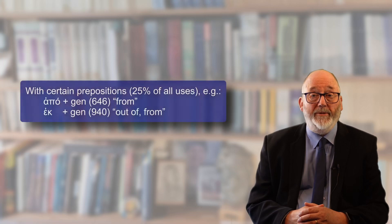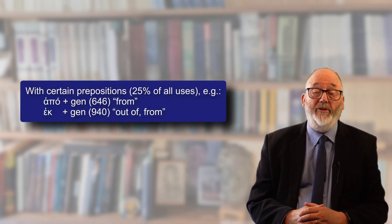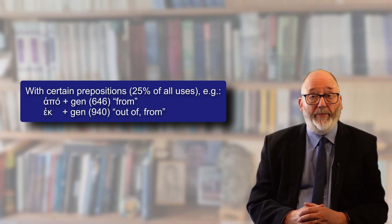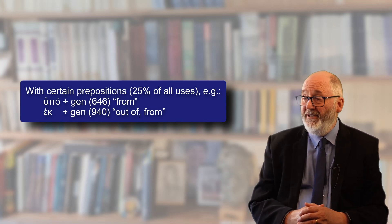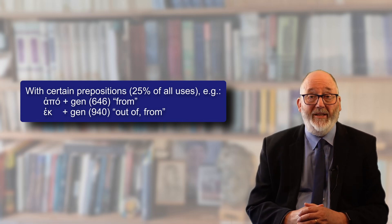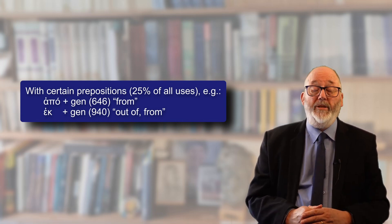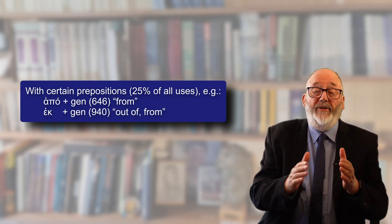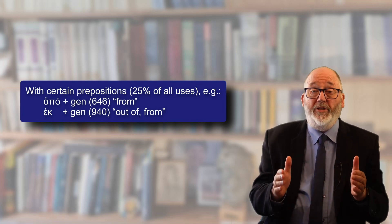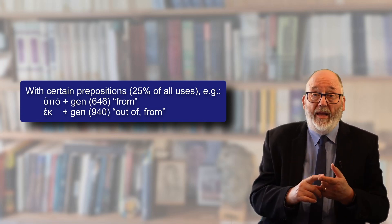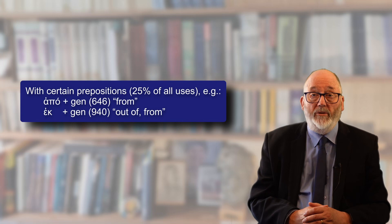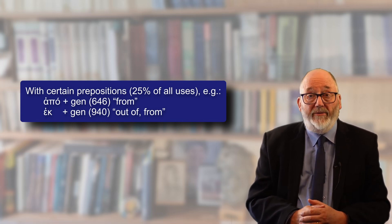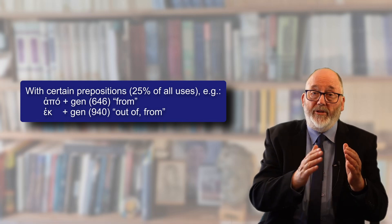About 25% of the uses of the genitive case are with prepositions. Two very commonly occurring prepositions that take the genitive case are apo and ek. Apo is used 646 times in the New Testament, and ek 940 times. Like all prepositions, ek and apo are followed by some words which form a prepositional phrase, and the nouns and pronouns and other words in that phrase that can take a case will all be in the genitive case.